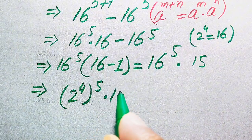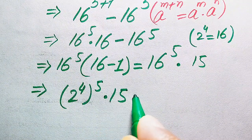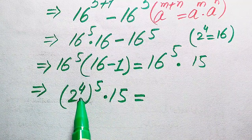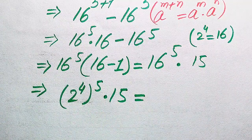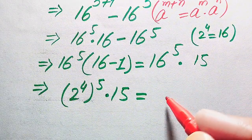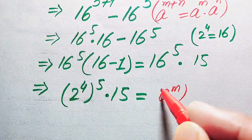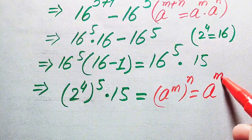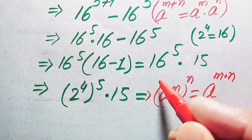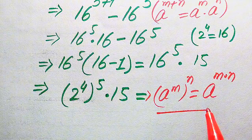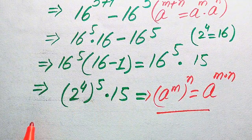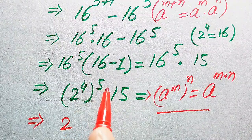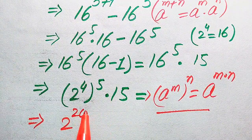Here we use another exponential law: if we have an exponent raised to an exponent, the exponents are multiplied. That is, a to the power of m, to the power of n, equals a to the power of m times n. Applying this rule, we multiply the two exponents: 4 multiplied by 5 becomes 20, giving us 2 to the power of 20, multiplied by 15.